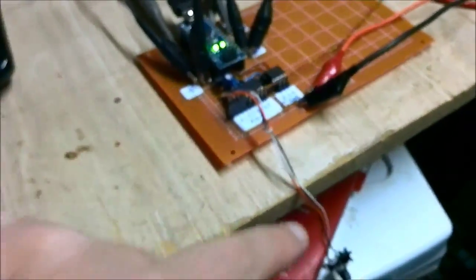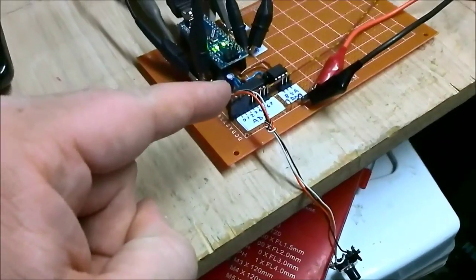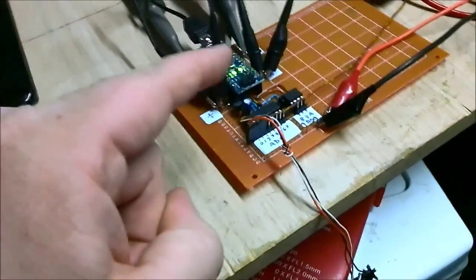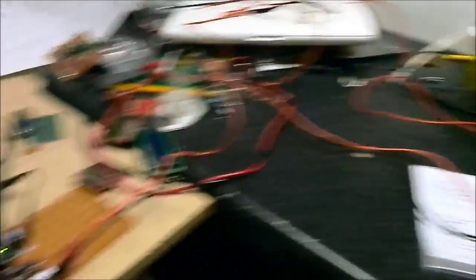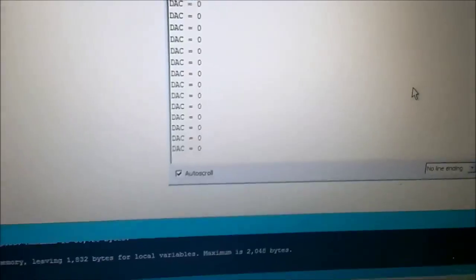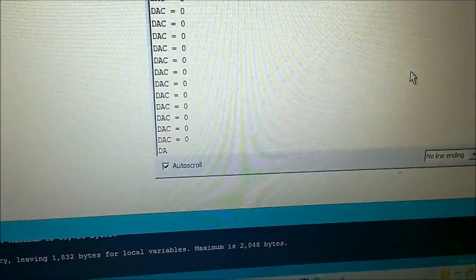So right now, this pot goes into the analog to digital, converts to digital, then converts the digital back to analog, and then goes all the way over here to this circuit. And on the screen, we have it reading the value of the DAC going out.